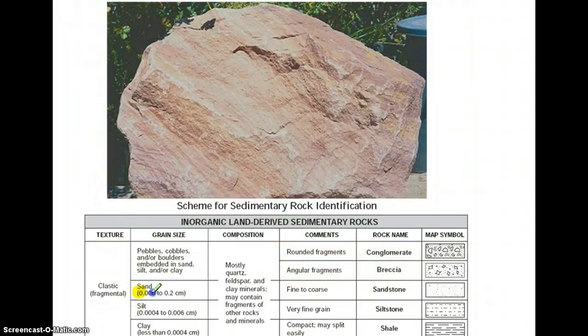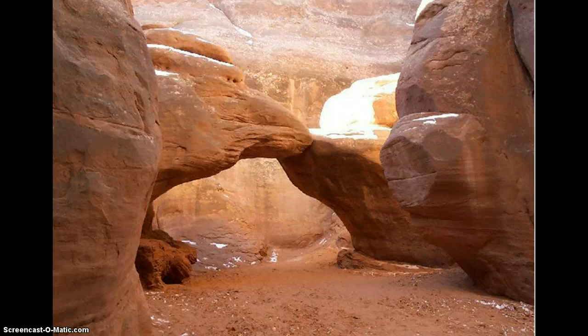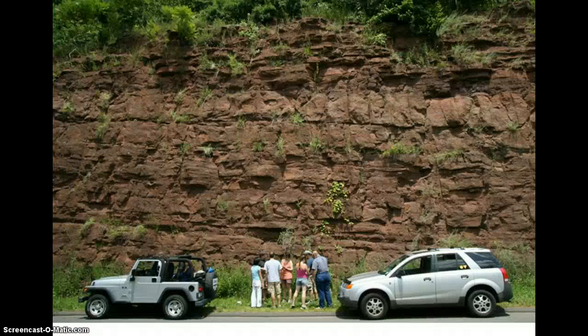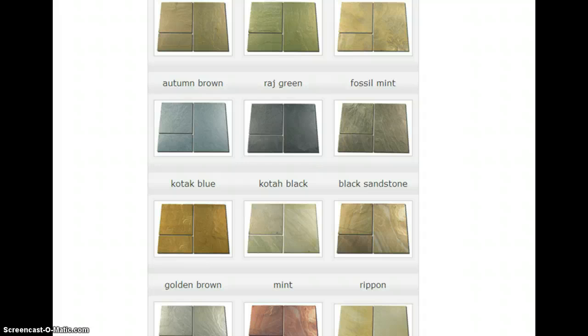If a rock has smaller pieces — individual grains ranging from six thousandths of a centimeter to two tenths of a centimeter — we would call that rock sandstone. Sandstone is easy to identify because when you feel it, it feels coarse and rough like sandpaper. These arches were made out of sandstone, which tells us a lot about Earth's history. This sandstone cut on the side of a highway in Connecticut shows how thick these deposits can be, telling us about the past history of the environment.